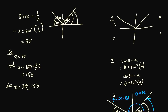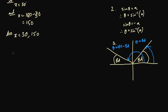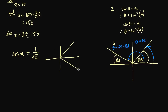Now let's do another example with cos x equals 1 over root 2. We need cos to be positive, so using CAST: cos is positive in the first quadrant and also in the fourth quadrant. Step 2: find the basic angle. Cos inverse of 1 over root 2 is 45 degrees. So the basic angle is 45 degrees, drawn with the horizontal line in both the first and fourth quadrants.